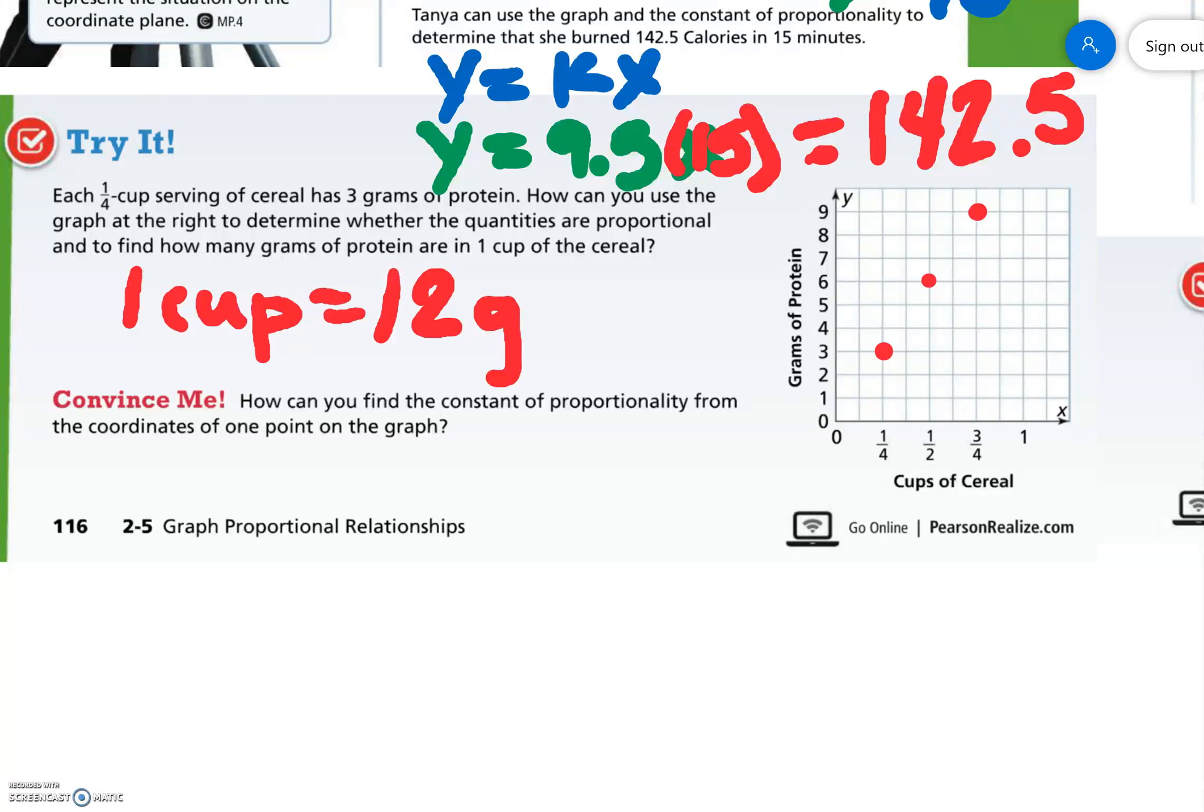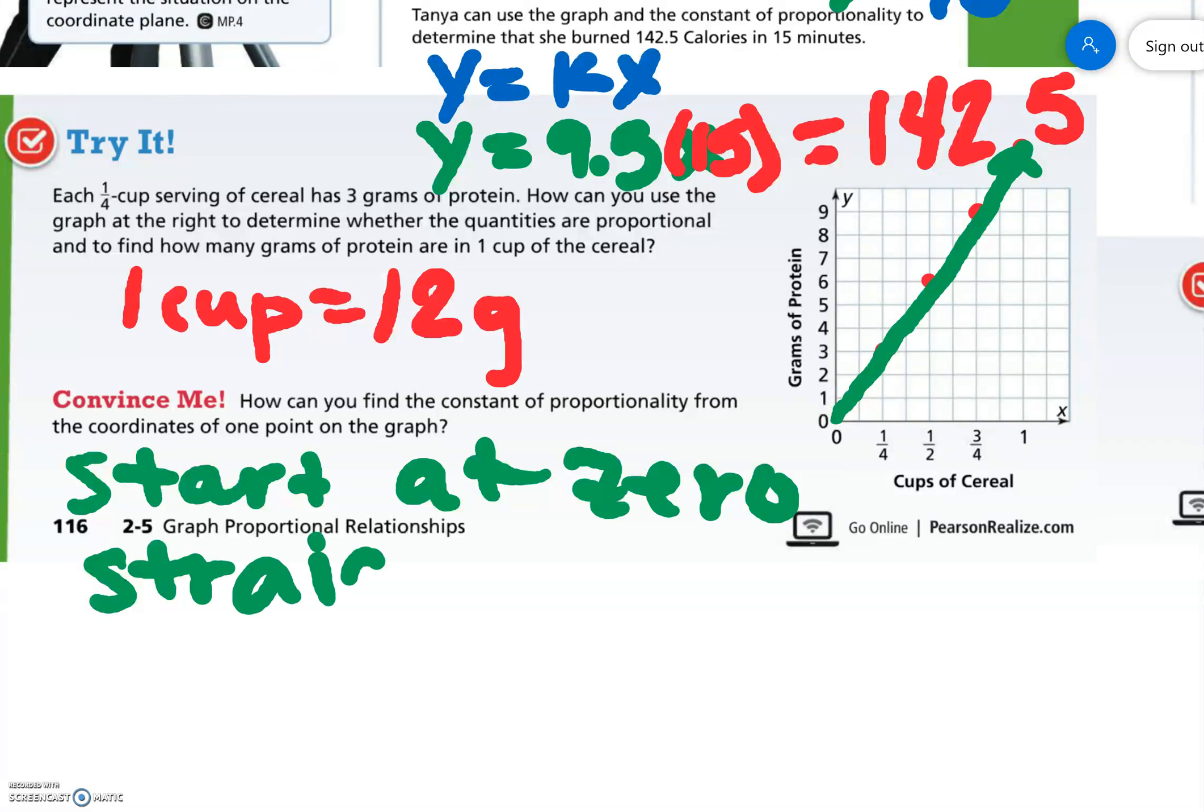And we can tell that this is a proportional graph. All the graphs that we've seen today have something in common. They all start at zero and are straight. So those are the two things when you're looking at a graph. They must start at zero and they have to be straight.